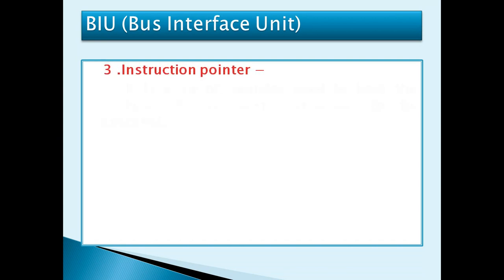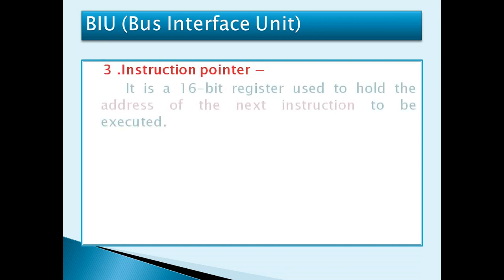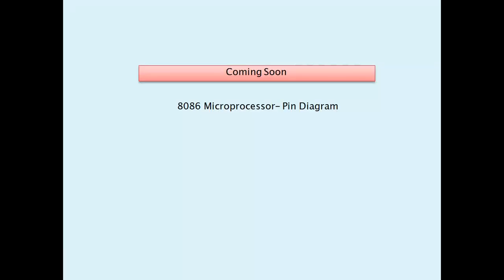The third part of the BIU is the Instruction Pointer, which is an important 16-bit register used to hold the address of the next instruction to be executed. These are the two functional parts of the 8086 microprocessor architecture, which we can see in any book.